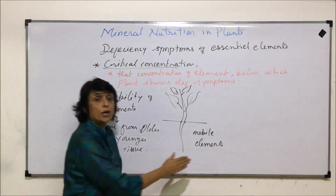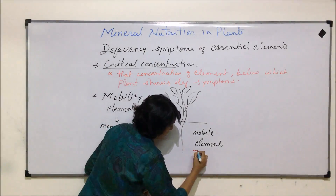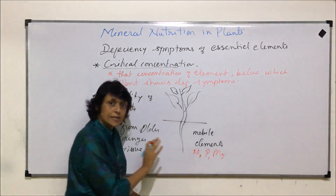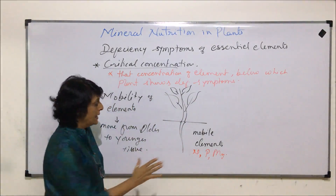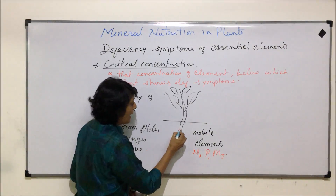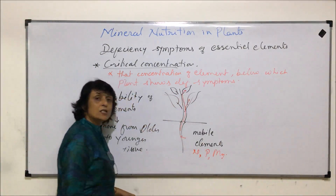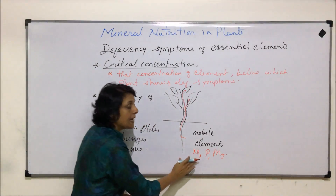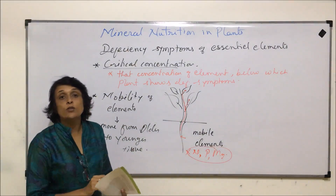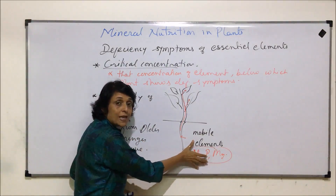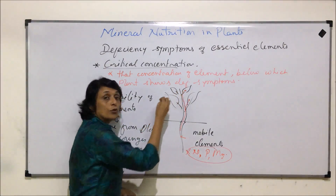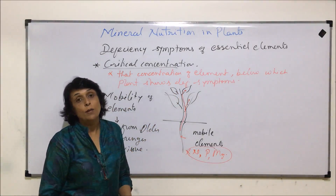Examples of mobile elements include nitrogen, phosphorus, and magnesium. If these elements are present in the soil, they get absorbed by the roots and conducted to both younger and older leaves. If these elements become deficient and are no longer available in the soil, the younger parts still require them for normal growth and development.